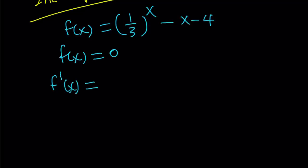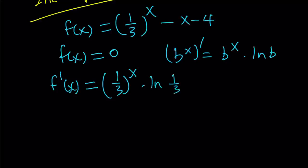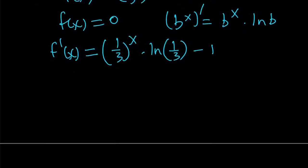To differentiate b to the power x, you just write the same thing and multiply by ln b. That is the correction factor. So when we differentiate it, it's going to become 1 over 3 to the power x and I have to multiply it by ln 1 third. And then derivative of negative x is negative 1. Derivative of a constant is 0, so I don't have to worry about it. So this is the derivative.